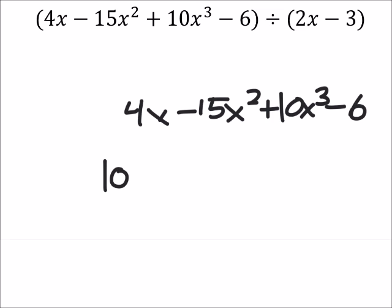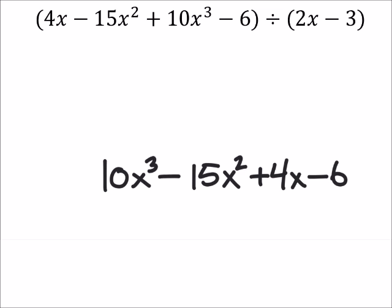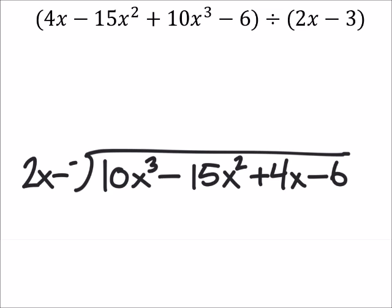So we're going to start with our 10x cubed. Then we got our x squared, so that's minus 15x squared. Then we got our positive 4x and then the minus 6. And we can work with that now that we've changed the order there. And of course, we'll divide this by 2x minus 3.